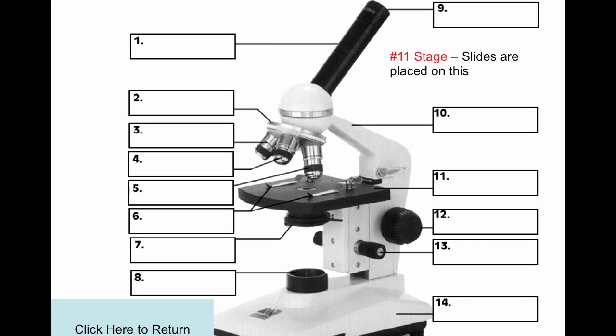Number 11 is called the stage. Slides are placed on the stage. Notice in the center of the stage, there's a circle that's open. There's a piece of glass on top. It's called a stage opening. It allows light to pass through.